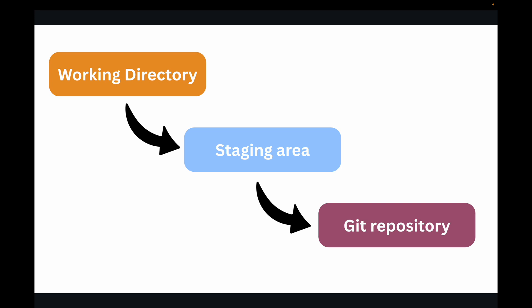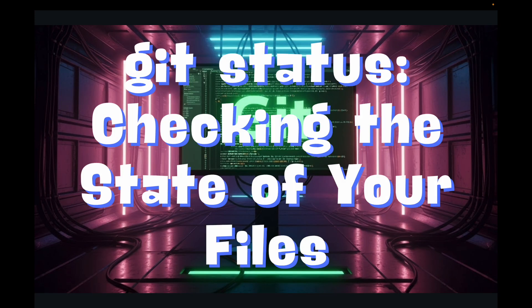Your workflow will always involve moving changes through these three different states: you make the changes in the working area, you move them to the staging area, and then you commit them to your Git repository. Now let's talk about the very first command in Git — the git status command — which we can use to check the status of your files.